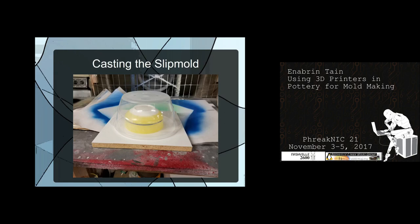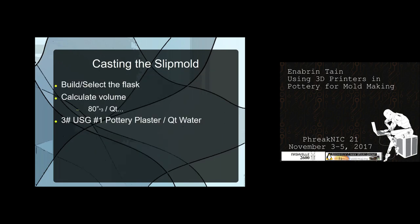One of the things you need to think about is how much plaster you're mixing. You can measure it out with a tape measure, or if your piece is hollow, you can measure the volume of what you're casting and scoop out the volume of the positive. You generally want to know what volume of plaster you need. Then you mix three pounds of USG Number One pottery plaster for every quart of volume that you're going to be pouring.